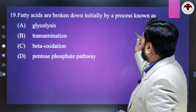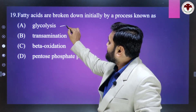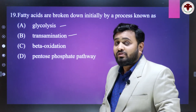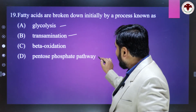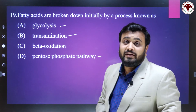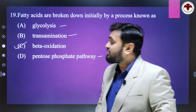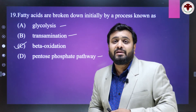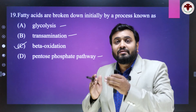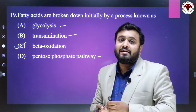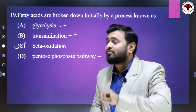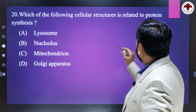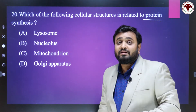Fatty acids are broken down initially by a process known as? Glycolysis is the breakdown of glucose, not fatty acid. Transamination is the process of amino acid synthesis. The pentose phosphate pathway is also not fatty acid breakdown. The right answer is beta oxidation. Beta oxidation converts fatty acid into acetyl-CoA, which then enters the TCA cycle.